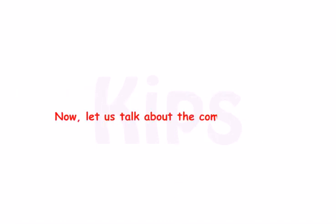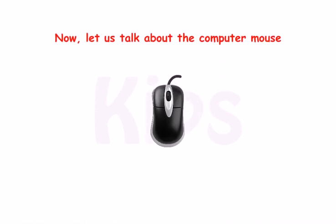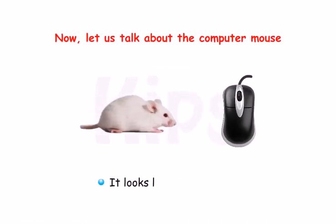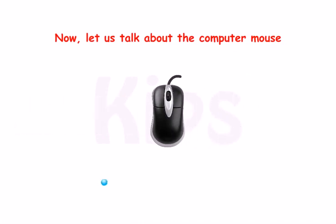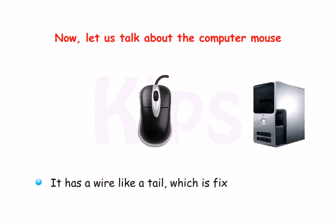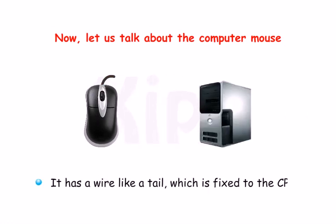Now let us talk about the computer mouse. It is small and it looks like a real mouse. It has two buttons on it. It has a wire like a tail which is fixed to the CPU.